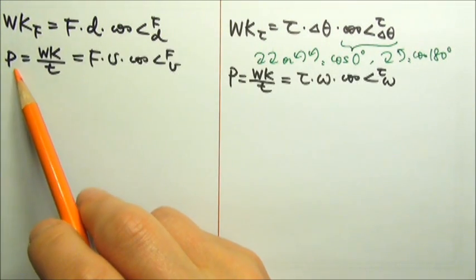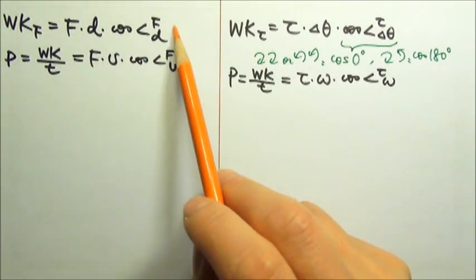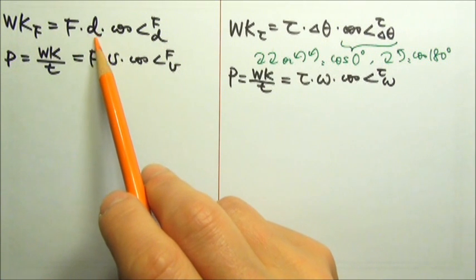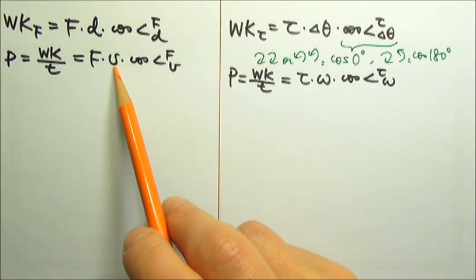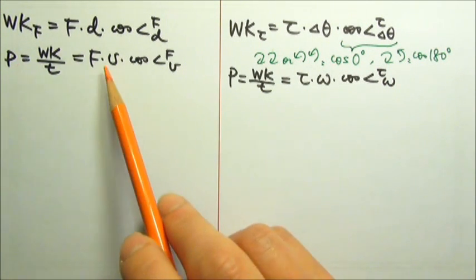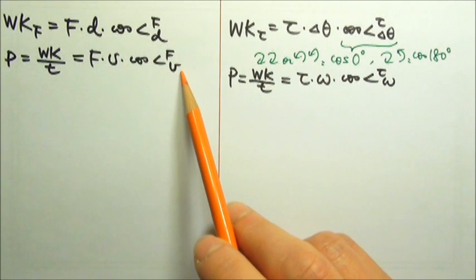We also learned that power is work over time. So if we divide the work by time, here you have displacement divided by time, which gives us the velocity. So power is also force times velocity times cosine the angle between the force and the velocity.